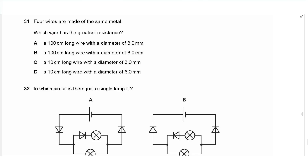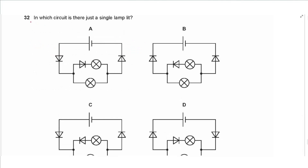Question 31 says: four wires are made of the same metal. Which wire has the greatest resistance? The greatest resistance corresponds to the greatest length and the smallest diameter. So the answer is A.